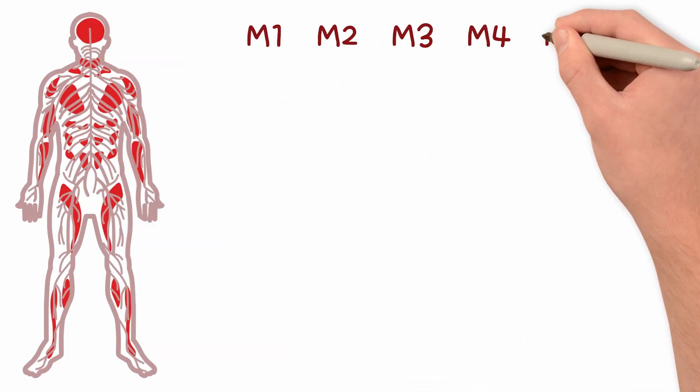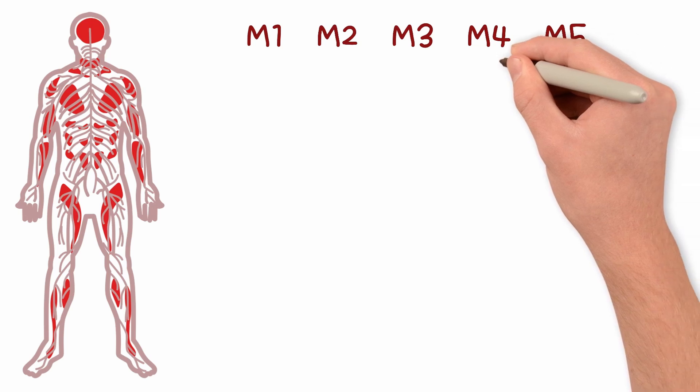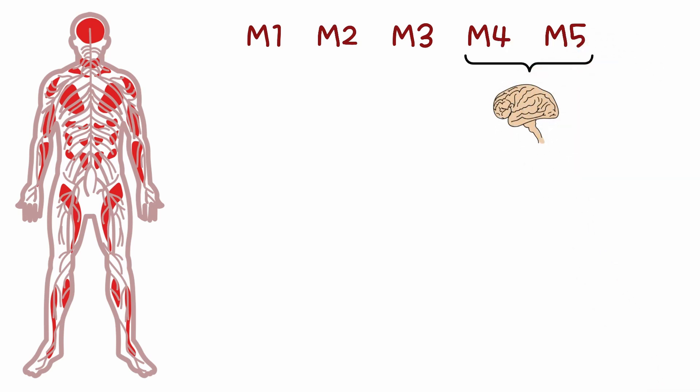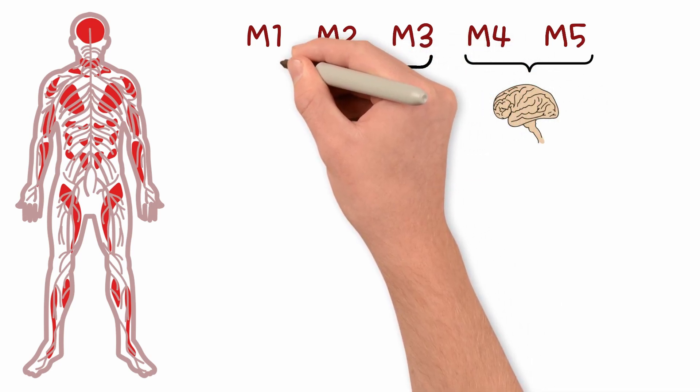Among the five muscarinic receptors, M4 and M5 are primarily in the CNS, which we will cover in a later video. For now, we are interested in M1, M2 and M3.